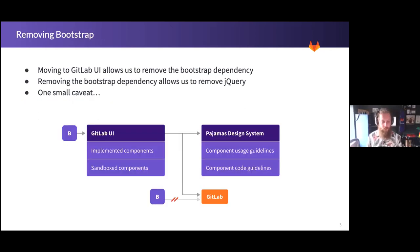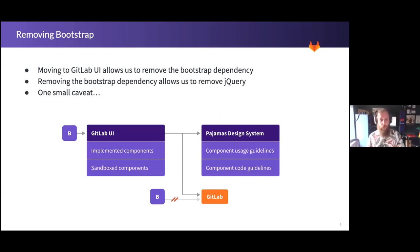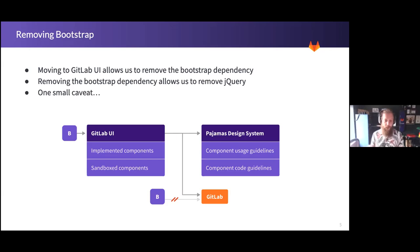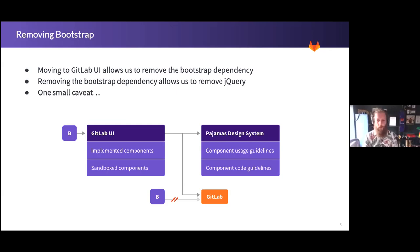There is one caveat to the removing Bootstrap side of things. If we move to GitLab UI, we can remove the Bootstrap dependency from GitLab itself, and removing that should allow us to start removing jQuery as well — getting rid of two fairly large dependencies at once. The small caveat is that GitLab UI itself has a dependency on Bootstrap, so we're not completely getting rid of it yet. But we're avoiding having Bootstrap included in two places, and this is the ultimate goal when everything's moved over.